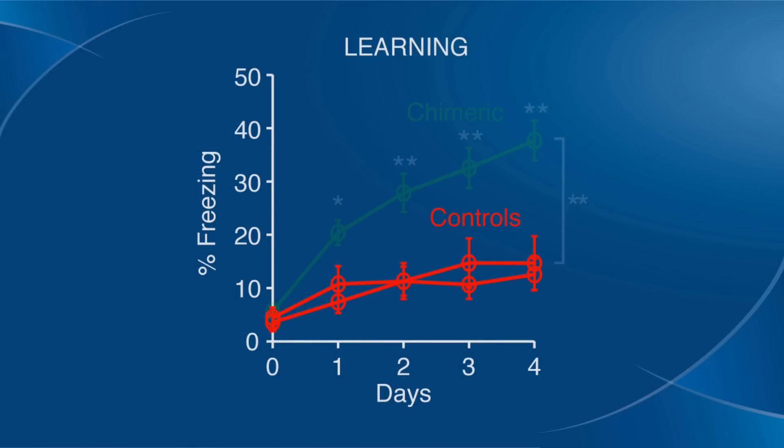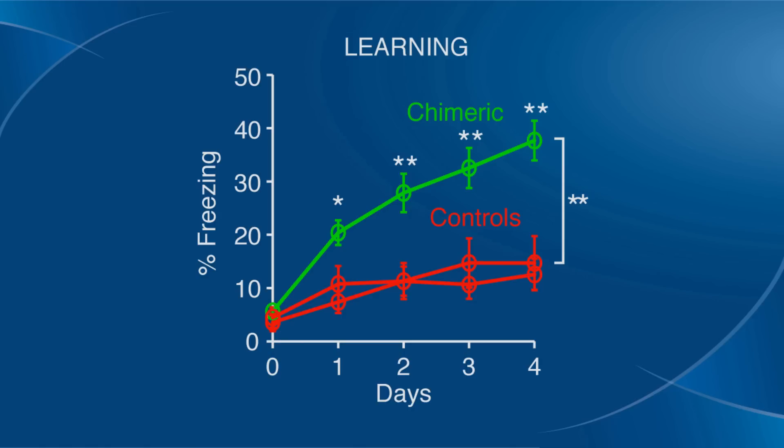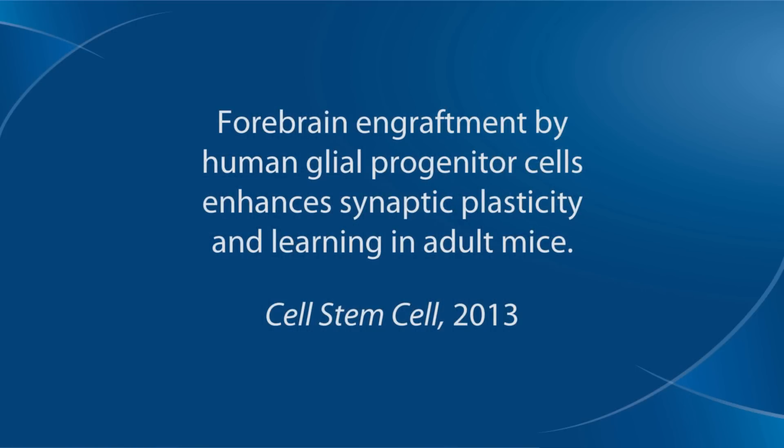We first looked at fear conditioning, then a variety of other behavioral tests. The bottom line is that the animals chimerized with human cells had much more rapid learning — both in terms of the electrophysiologic surrogate of long-term potentiation and in actual behavioral testing. So here we were essentially changing the functional capabilities of these mice by virtue of human glial chimerization, telling us that human glia have a species-specific role in intellectual capability and cognitive processing capability that previously we suspected, but this is our first proof of the point.